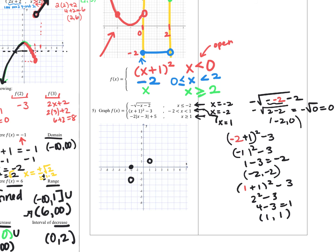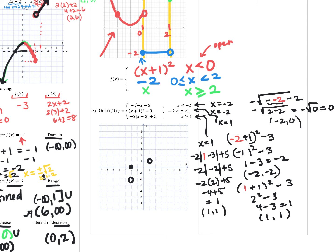For the last piece at x equals one: negative two times one minus three inside absolute value, plus five. That's negative two times the absolute value of negative two, plus five — negative two times two is negative four, plus five equals one. So (1, 1) is also on this piece, and since it fills in that dot, it is a closed circle there.